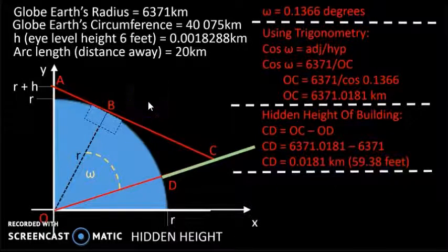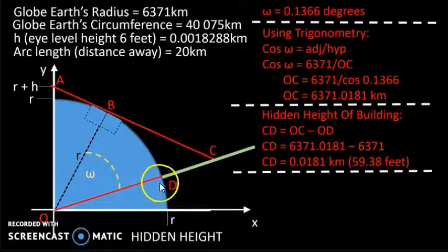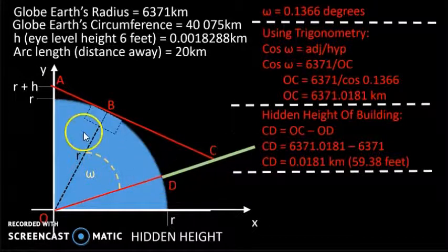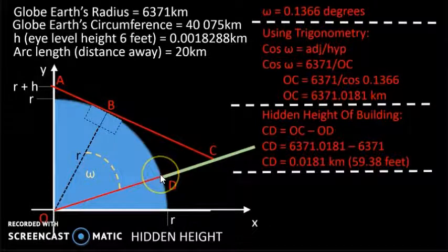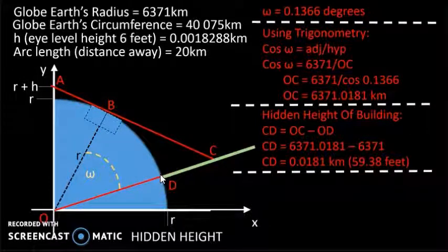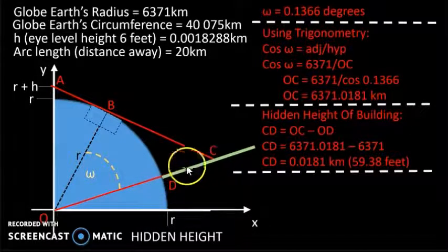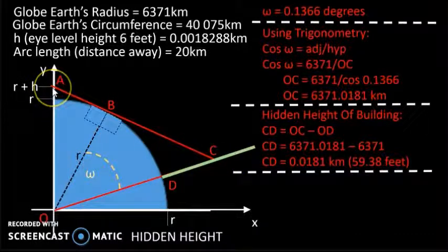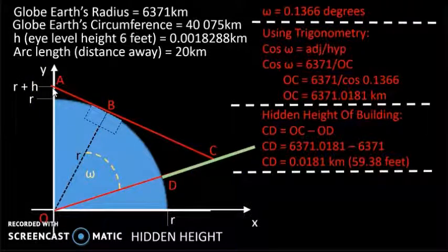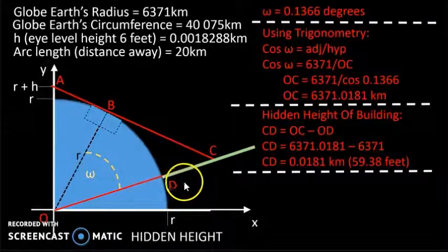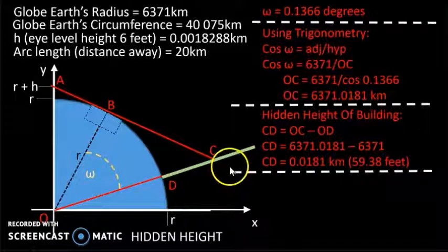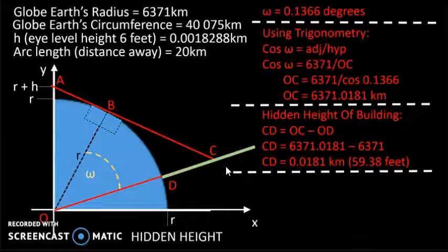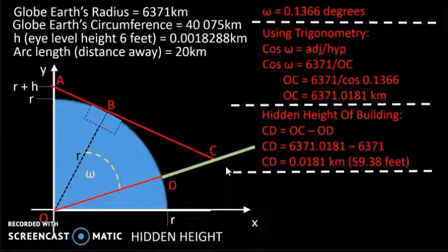What this is saying is that if there is a building that is an arc length of 20 kilometres away, then the hidden height of that building from an observer who is 6 foot tall will be 0.0181 kilometres, or 59.38 feet.